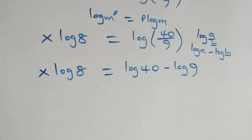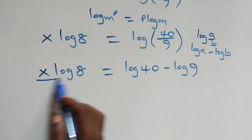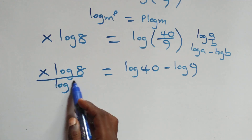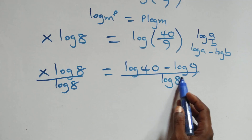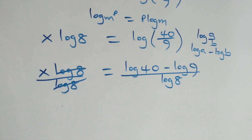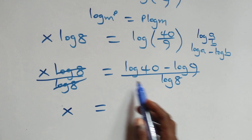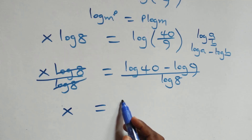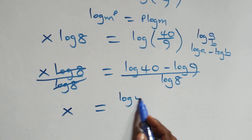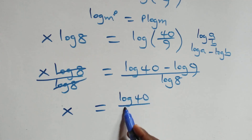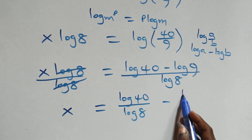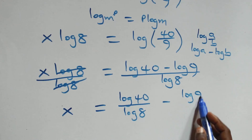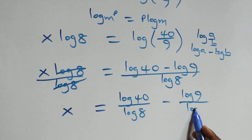Next step: divide both sides by log 8 — divide this side by log 8, also divide this side by log 8. Here log 8 cancels each other. Now we have x equals, and we separate this into two fractions: log 40 over log 8 minus log 9 over log 8.